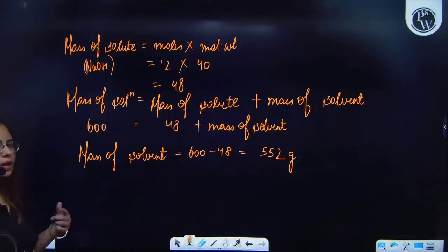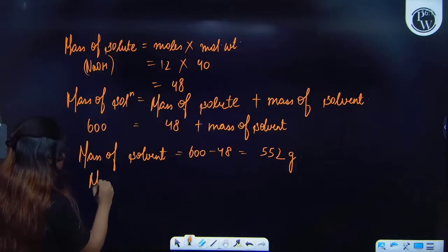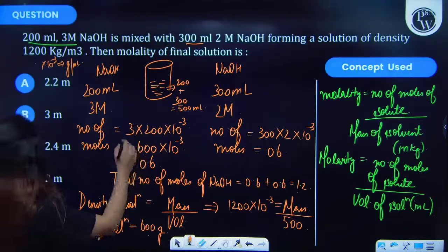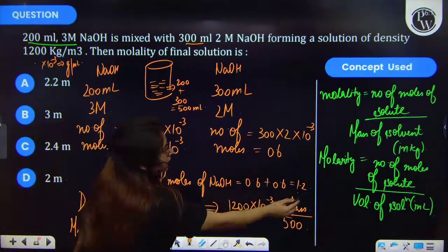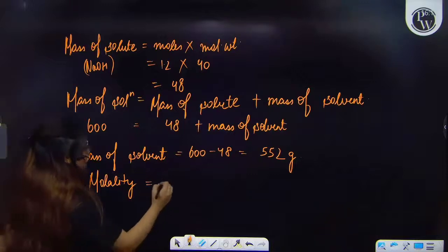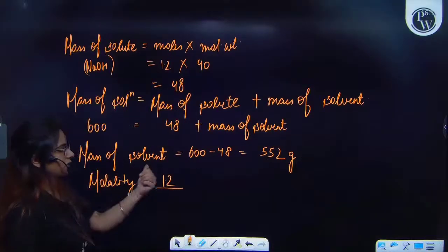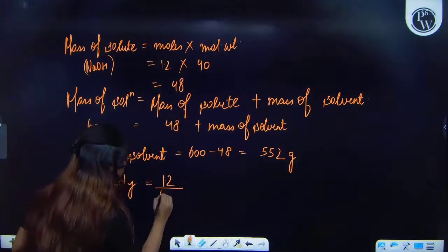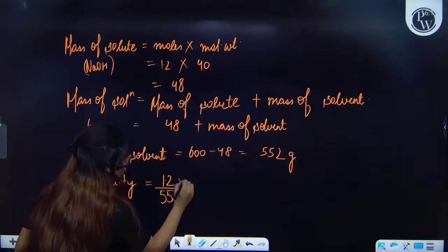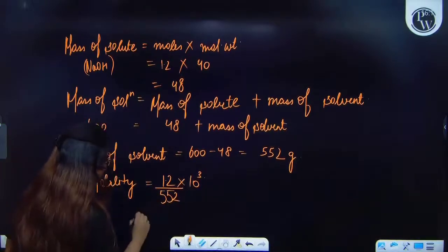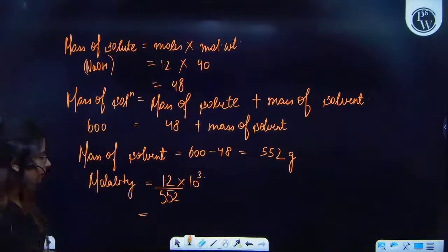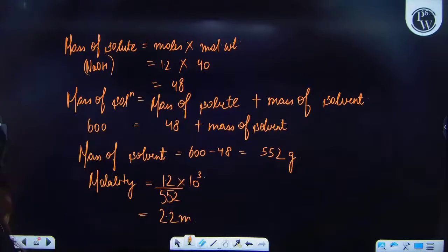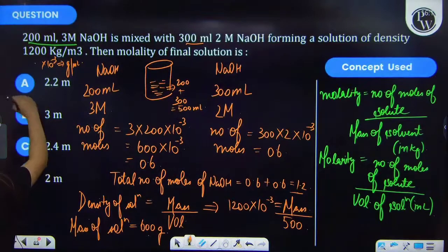Now we have to find the molality. And for molality it is equal to number of moles of solute - that means 1.2 moles of solute that we have found - upon mass of solvent. 552 gram, but we have to put in kg, so we have to multiply by 10 raised to the power minus 3. And so therefore on solving you will be getting 2.2 molal. That means your option A is the correct answer.